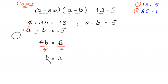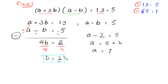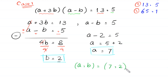So we get the value of b equals 2. To find the value of a, we substitute b equals 2 into the equation a minus b equals 5. This becomes a minus 2 equals 5, so a equals 5 plus 2, which is 7. So from case 1 we get b equals 2 and a equals 7. The first pair of solutions is (a, b) equals (7, 2).